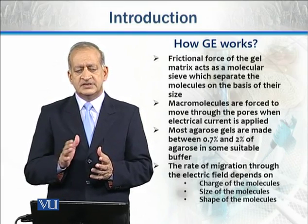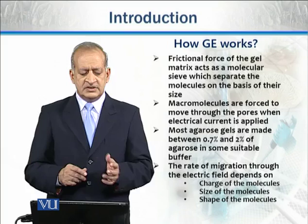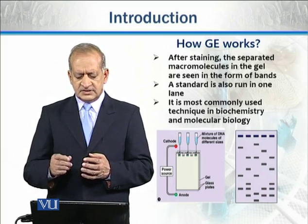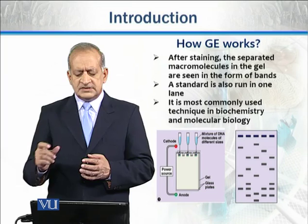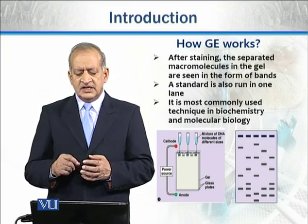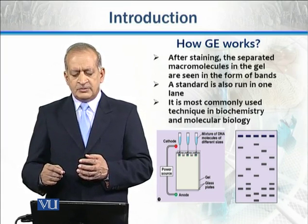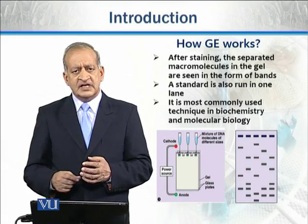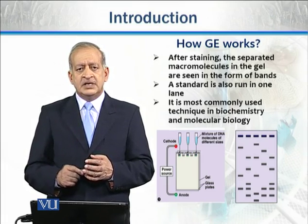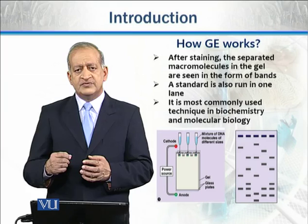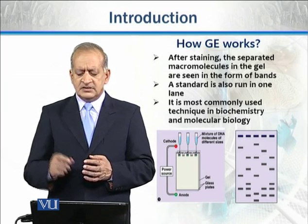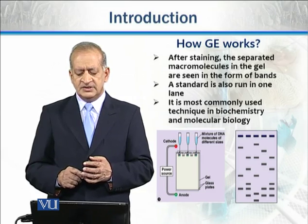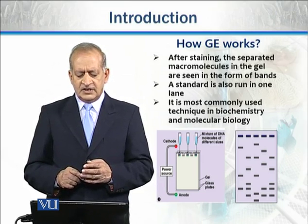The third factor affecting migration rate is the shape of the molecules. Generally, globular molecules move in a smoother way compared to irregularly shaped molecules. The separated molecules in the gel are stained and can be seen in the form of bands. Along with the samples, a standard is also run which is used to measure the size of the bands present in the gel. Gel electrophoresis is the most commonly used technique in biochemistry and molecular biology.